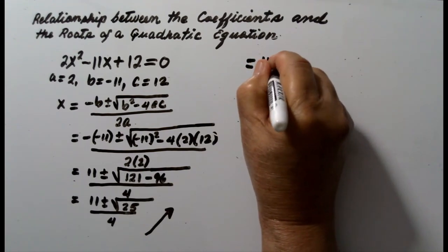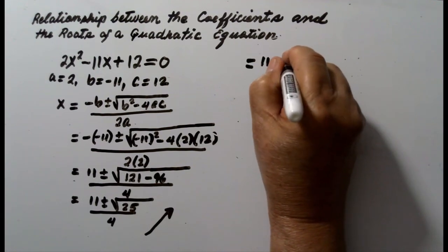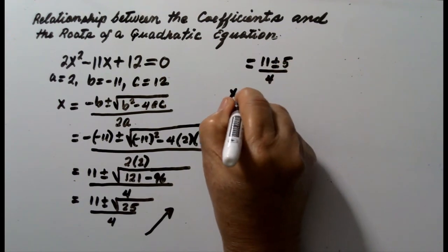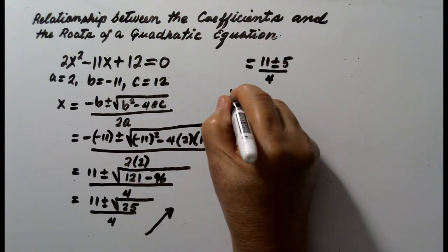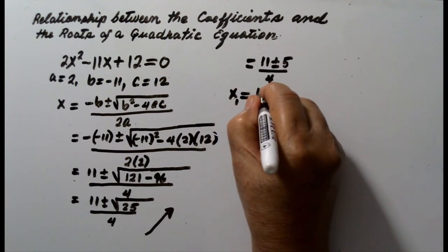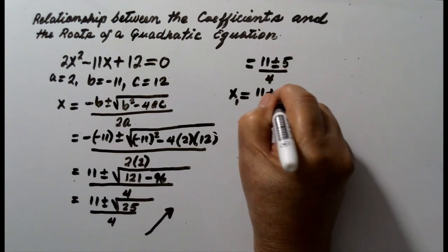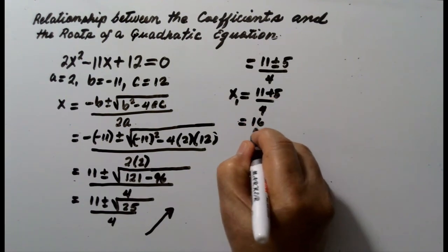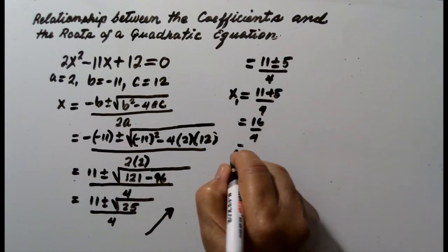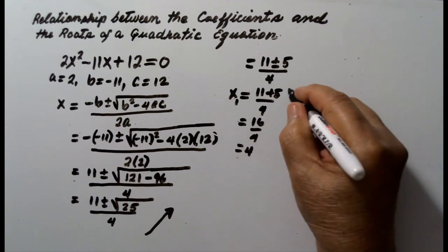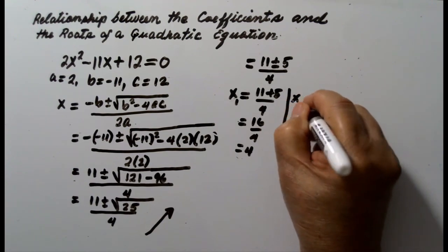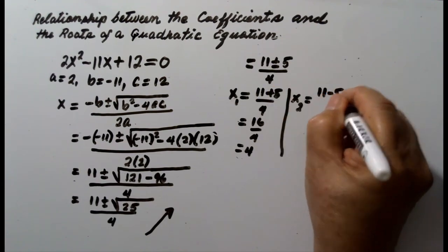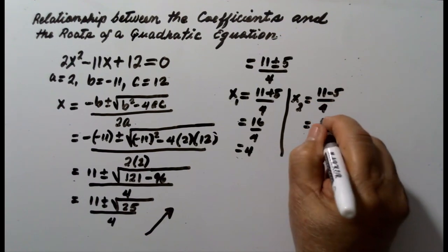So this is equal to 11 plus or minus the square root of 25, which is 5, over 4. Let x sub 1 represent the first value: when 5 is positive, we get 11 plus 5 over 4, which is 16 over 4, equal to 4. Let x sub 2 represent the second value: 11 minus 5 over 4, which is 6 over 4.